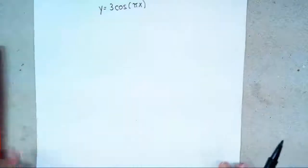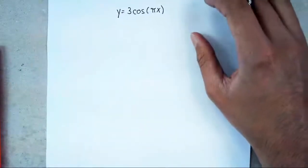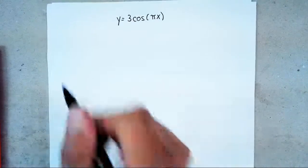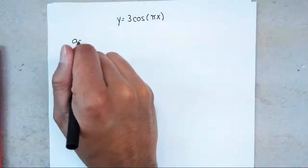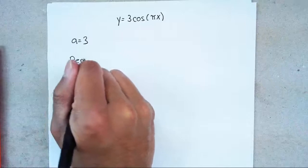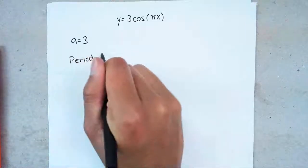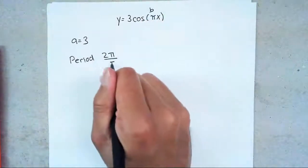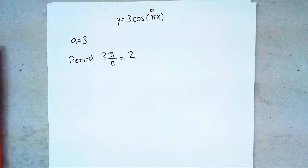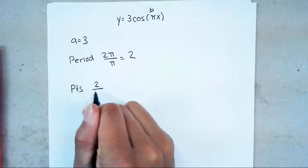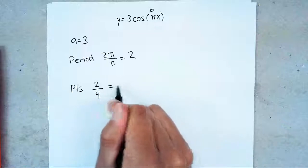Now one last example for cosine: y = 3cos(πx). Do the same patterns. Find your A — A = 3, always absolute value, always positive. Next, figure out your period: 2π over B, and B is the number in front of x which is π, so 2π over π simplifies to give you 2. That means one cycle is 2 units long. Find your points: take your period of 2, divide by 4, and you get 1/2.